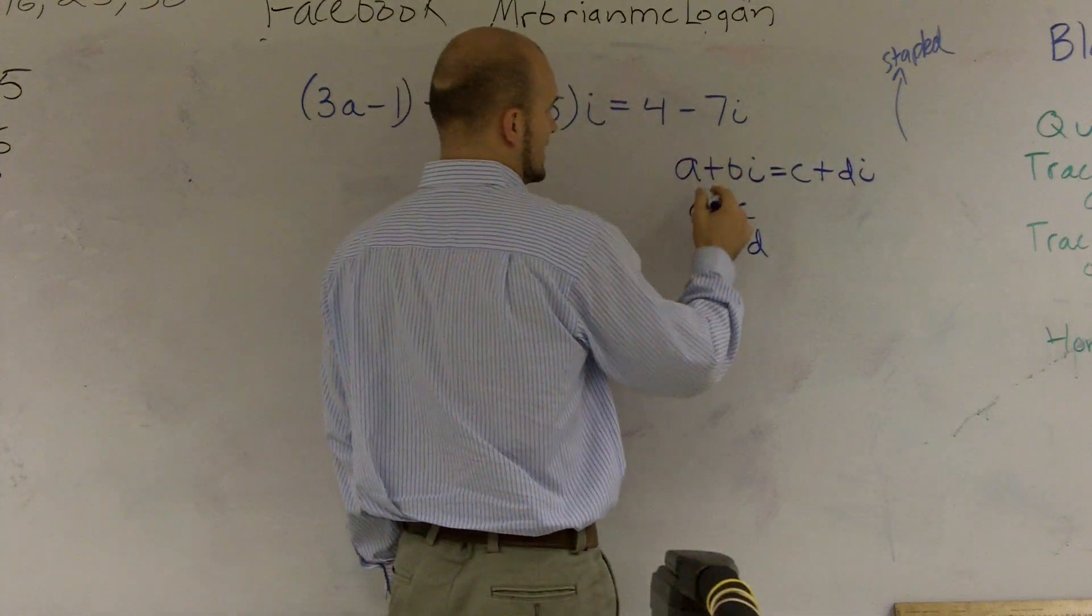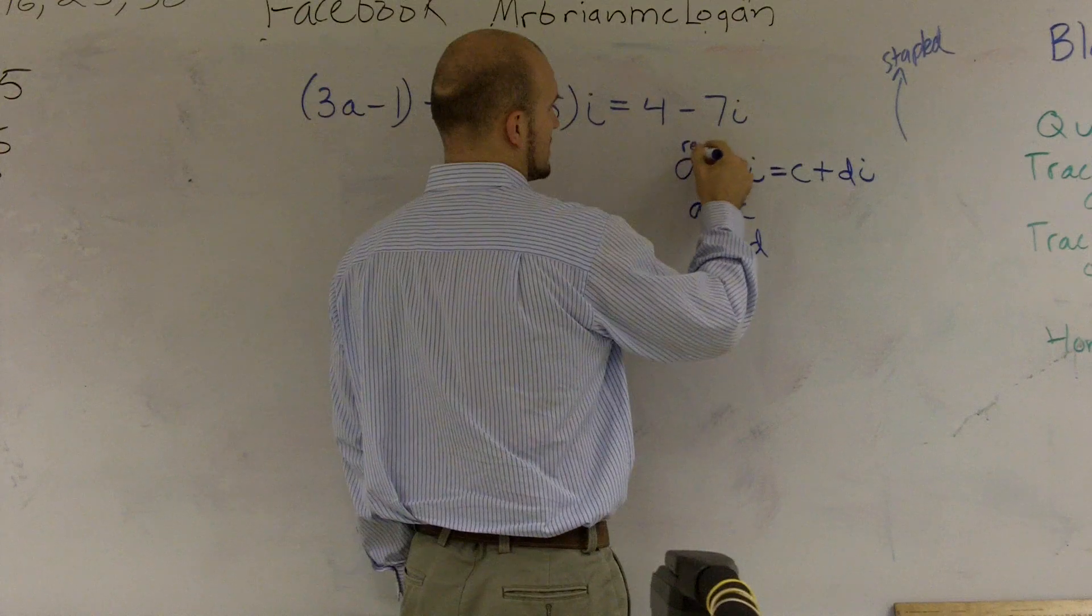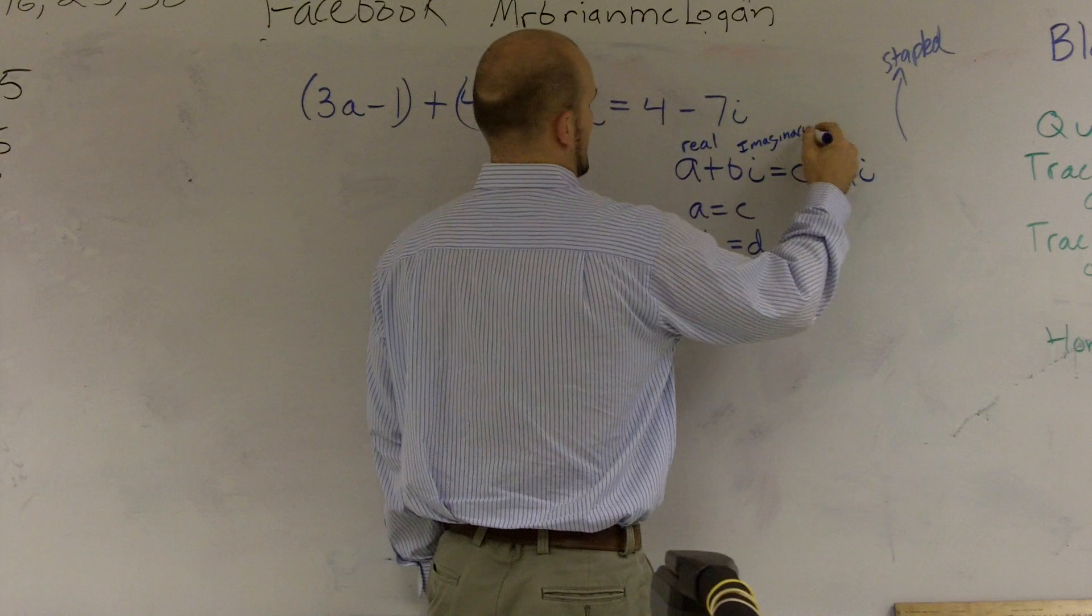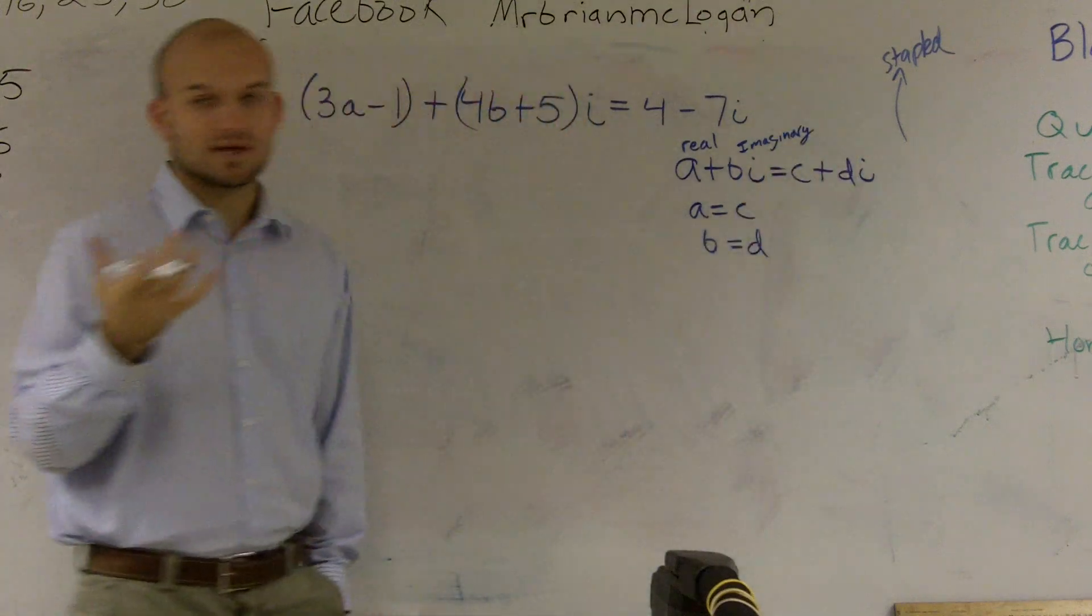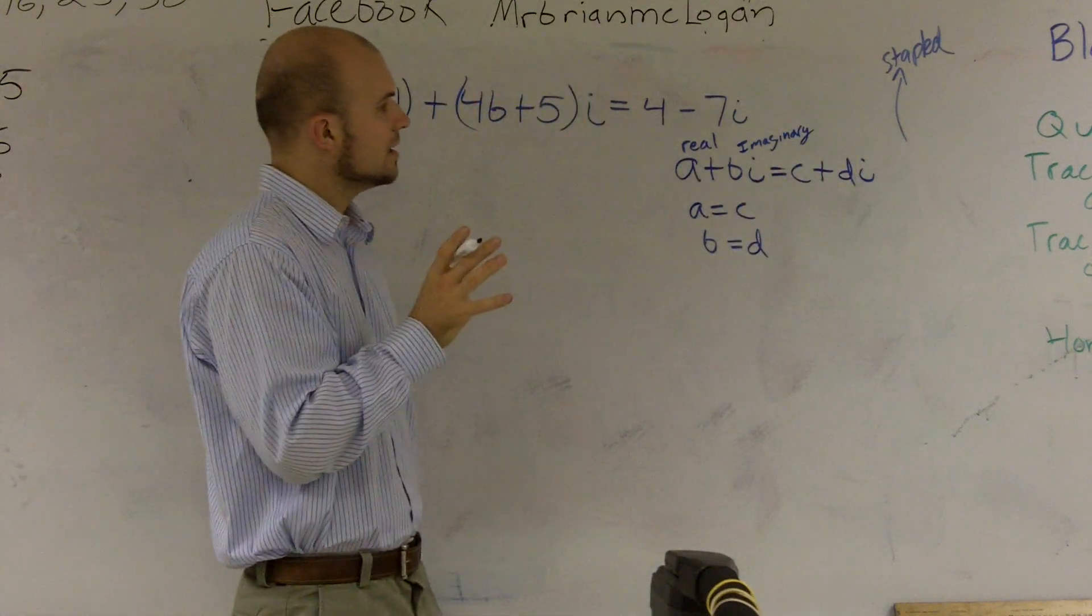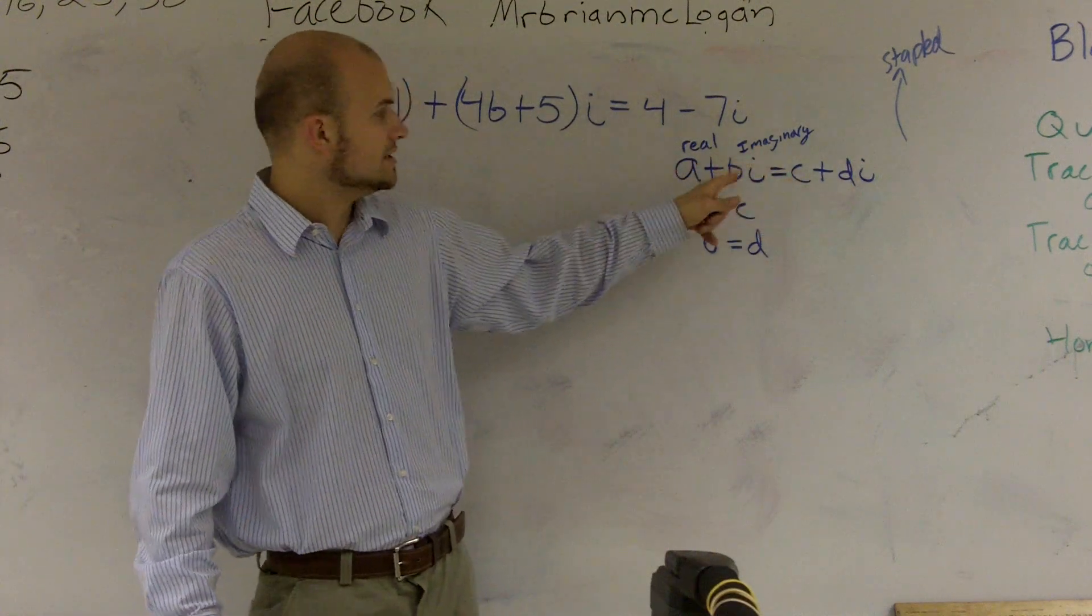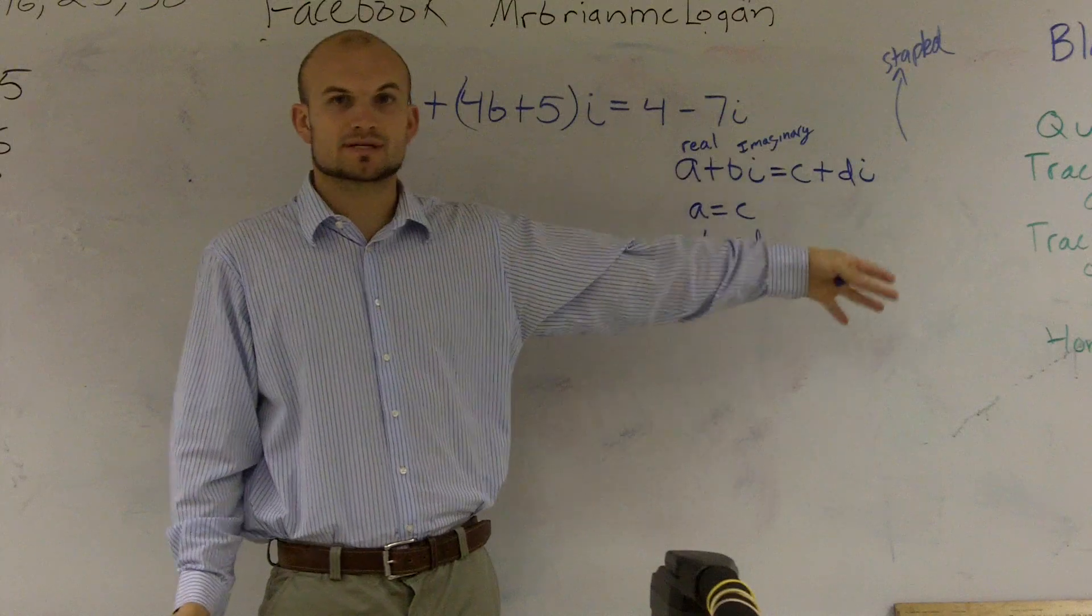Because remember, a, this is my real part, and b is my imaginary. So when you have two complex numbers in standard form, they are equal to each other when the reals equal the reals and the imaginary equals the imaginary. Does that make sense?